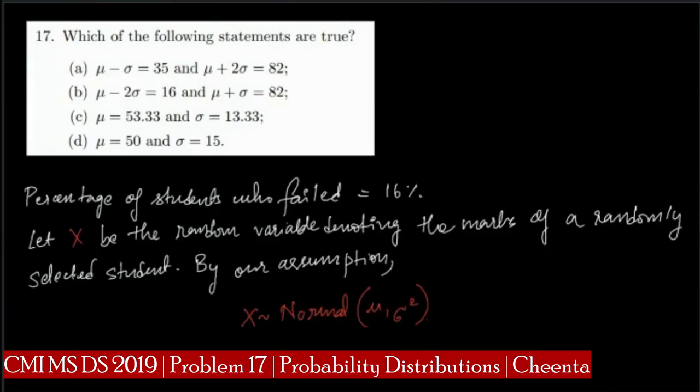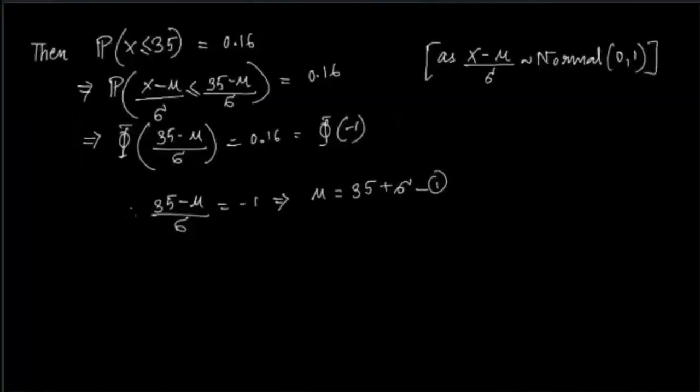Let capital X be the random variable denoting the marks of a randomly selected student. By assumption, X follows a normal (μ, σ²) distribution. Now we know the percentage of students who failed is 16%, so the probability that marks obtained is less than or equal to 35 is 0.16. Why 35? If we assume full marks is 100, then 35% of 100 is 35.